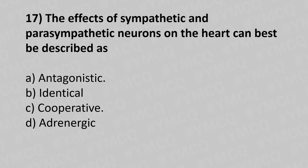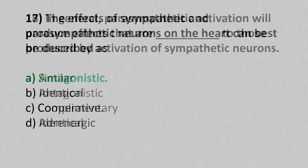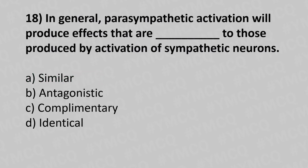Question 17: The effect of sympathetic and parasympathetic neurons on the heart can best be described as — Option A: antagonistic. Option B: ideal. Option C: cooperative. Option D: adrenergic. The answer is Option A — antagonistic.